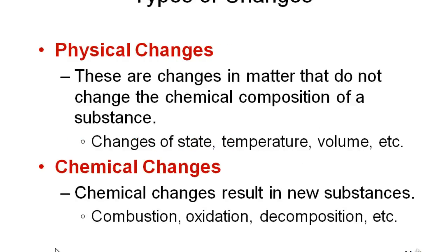Physical changes are changes in matter that do not change the chemical composition. For example, when liquid water is converted into water vapor, it is still H₂O — the chemical composition does not change. Whereas chemical change results in the formation of a new substance. The best example is burning gasoline in your car — it gets converted into carbon dioxide, water, and a lot of heat, which is used to run the car. In a chemical change you get a new substance with new chemical composition; in a physical change, the chemical identity remains the same.